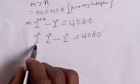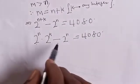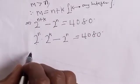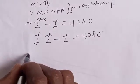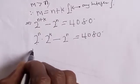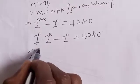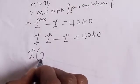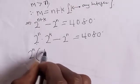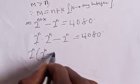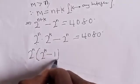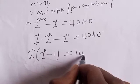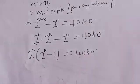Then 2 raised to power (n plus k) can also be written as 2 raised to power n multiplied by 2 raised to power k. So we factor out 2 raised to power n, giving us: 2 raised to power n times (2 raised to power k minus 1) is equal to 4080.